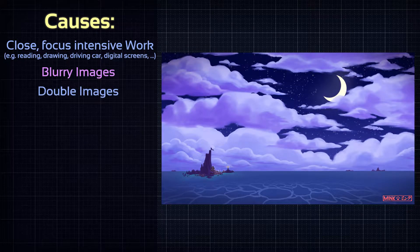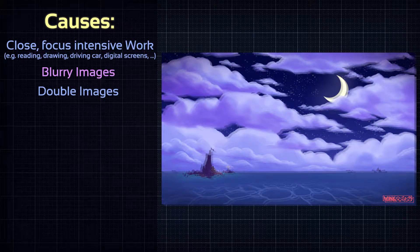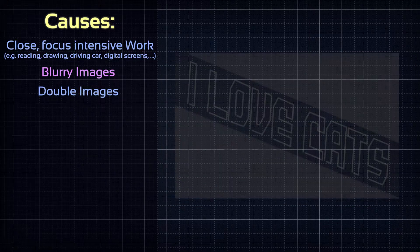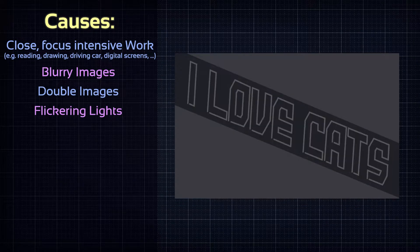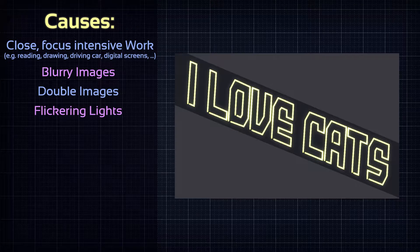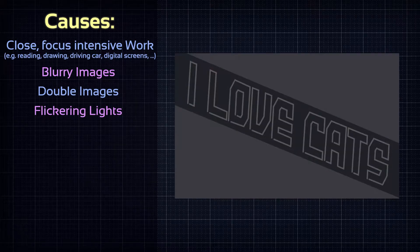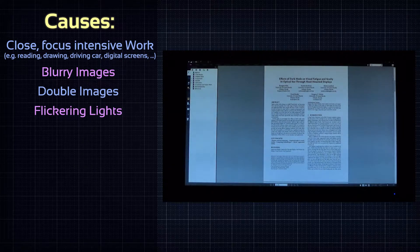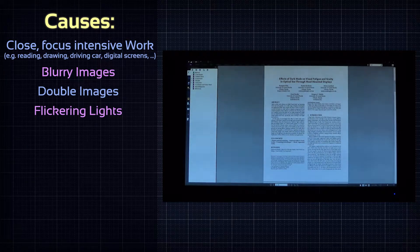Double images caused by printing mishaps or faulty displays can also have this effect. Flickering from room lights or screens can be pain-inducing too, even the kind of flickering that we don't actively perceive. The iris of the eyes contracts every time the light is briefly turned on again.